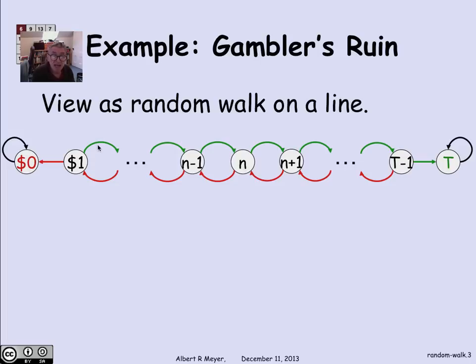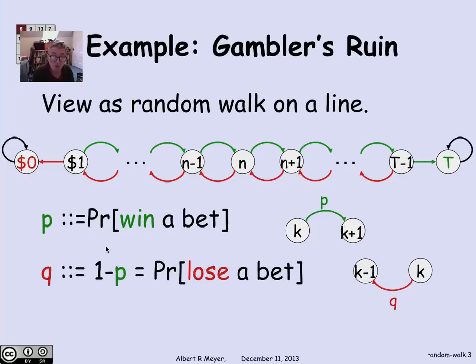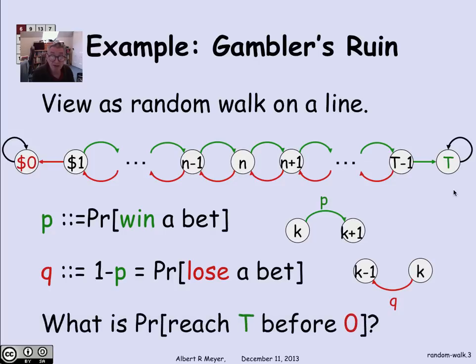The green edges are weighted with the probability P of winning a bet. So we have transitions from k to k plus 1 for k less than T with weight probability P. And likewise, the red edges are weighted with the probability of losing a bet q or 1 minus P. So there is a digraph or state machine that describes the Gambler's Ruin problem